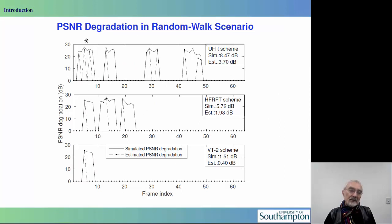As we view the peak SNR degradation versus the video frame index in a random-walk scenario, we observe the same phenomenon, namely that the unity frequency reuse scheme drops a large number of frames, and so the peak SNR degradation is very often as high as 30 dBs. This is somewhat more mitigated with the higher frequency reuse-based scenario, but the best peak SNR is achieved by the vectorized transmission. Only the frames around frame 5 to 10 or 9 are dropped in this situation.